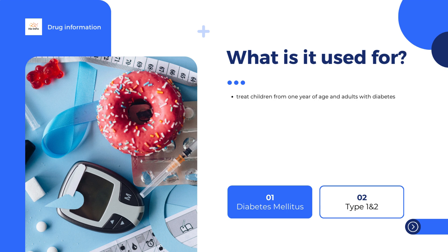Diabetes is a disease in which blood glucose is high, either because the body cannot produce insulin — type 1 diabetes — or because the body does not make enough insulin or cannot use it effectively — type 2 diabetes.